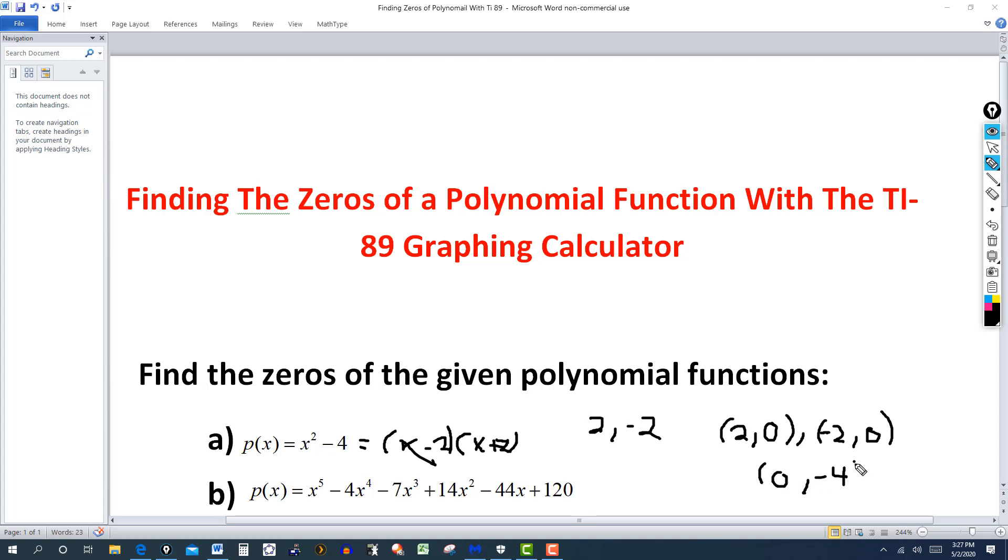And I'm only entering that value just to graph it here, so you can see what we have. So, the point 2, 0 and minus 2, 0, and the point 0, negative 4 are on the graph. 2, 0, negative 2, 0, and 0, negative 4 are on the graph.